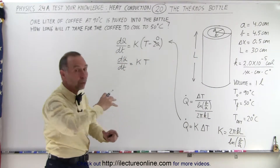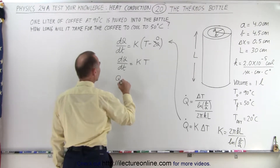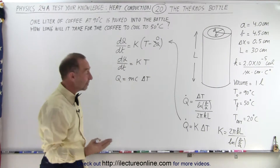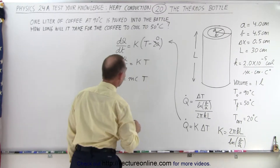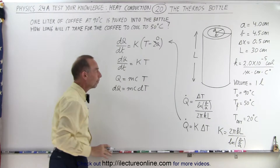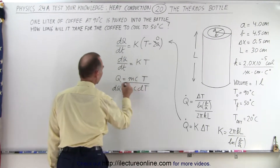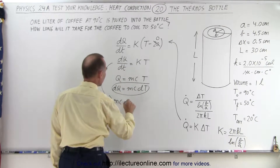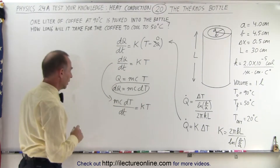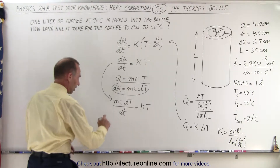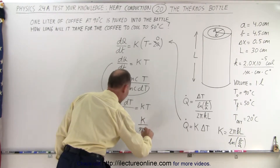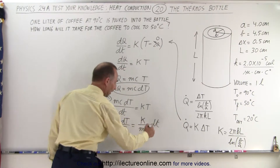At the same time we need to think about the heat being pulled out of the hot coffee. The heat contained in the coffee is q = mc·ΔT, and since ΔT is simply T in our simplified notation, we can write q = mc·T. Taking the differential, dq = mc·dT. Now if we replace dq in the earlier equation, we get mc·dT/dt = K·T.